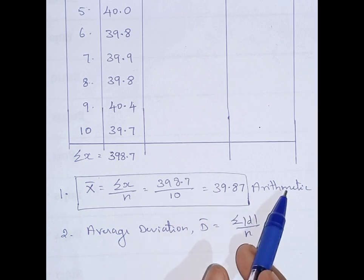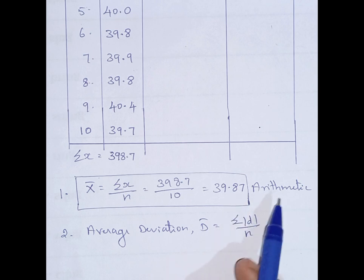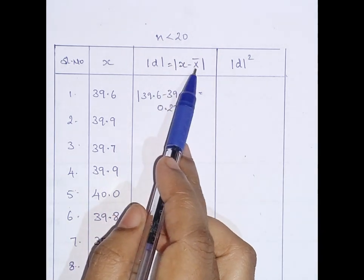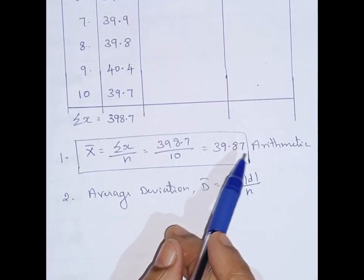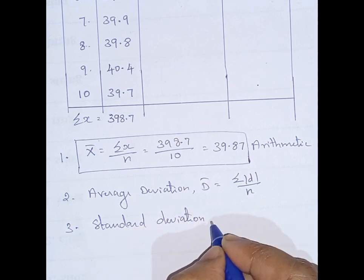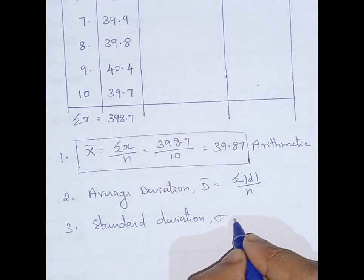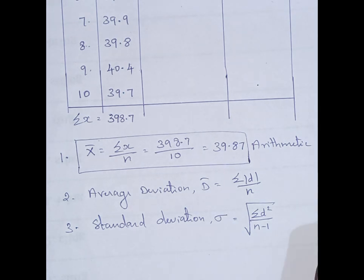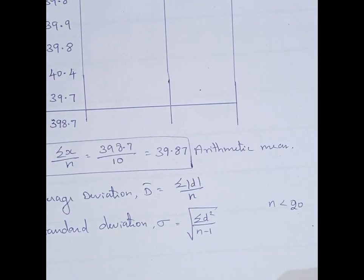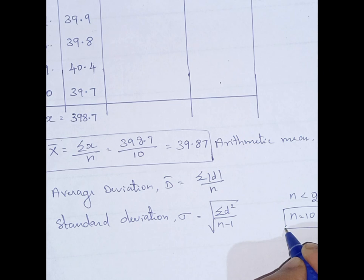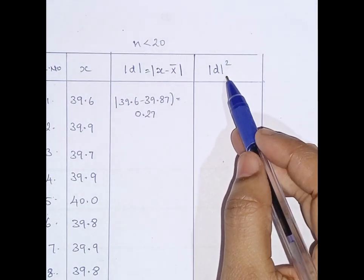So dividing by 10, I get 39.87 as the arithmetic mean. It is always better to have two decimal places for accuracy. For standard deviation, since n is less than 20, the formula is the square root of summation of D squared divided by n minus 1. The number of observations here is 10, which is why I use this formula. I need summation of D squared, so I compute D squared for each reading — for example, 0.27 squared.